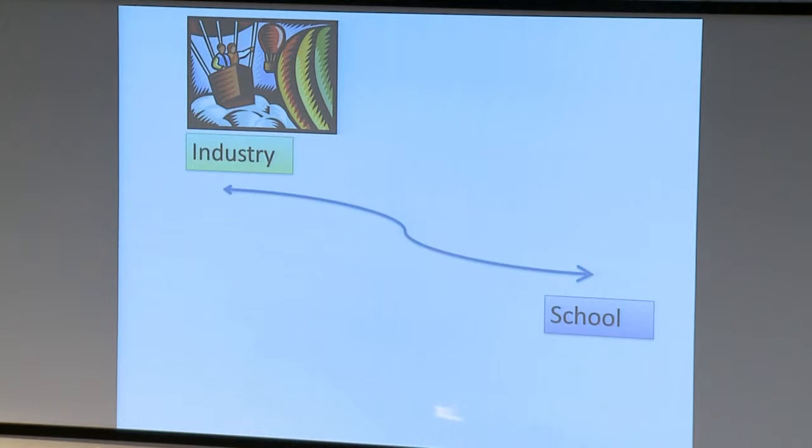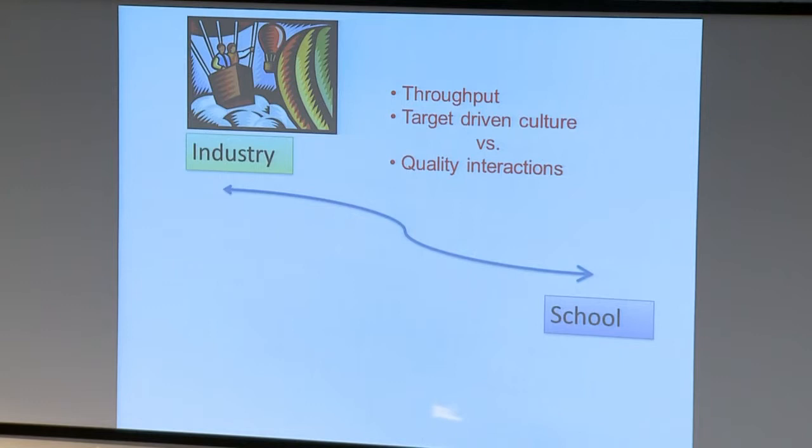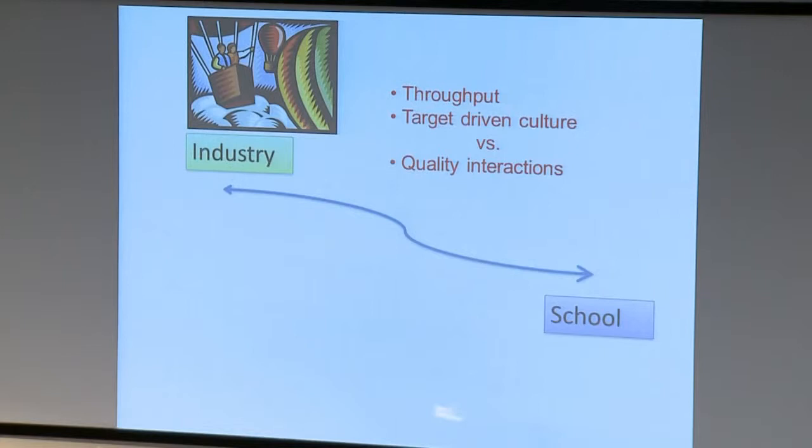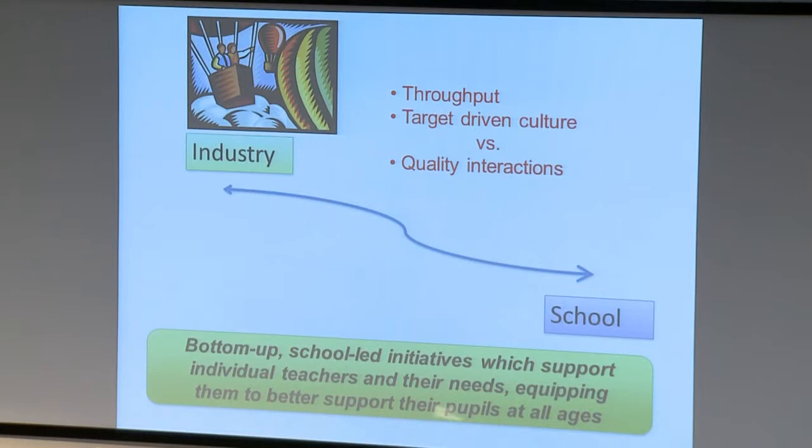So industry's solution to this is parachute someone in, spend an hour with the kids, parachute them out, don't have to see them again. Yeah, that's nice and easy for industry and academia. Where are the benefits to school? They're very few and far between. If you do parachute people in like that, yeah, you'll get throughput, you'll get high numbers, and it will all look very impressive when you report it back to government that X number of thousand people have been involved. But are they really quality interactions that are going to benefit the schools and their teachers? The chances are not. So our network advocates bottom-up, school-led initiatives which support individual teachers and their needs, equipping them to better support pupils of all ages.